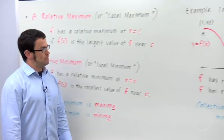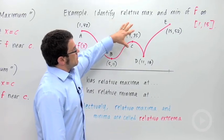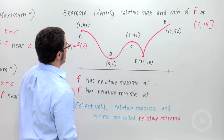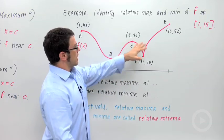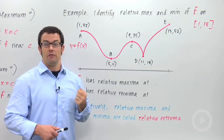Let's take a look at an example. The problem says, identify the relative max and min of f on the interval from 1 to 15. Now, that's the part I've got graphed here. So this is my graph of y equals f of x. And I want to identify where the relative maxima and relative minima occur.